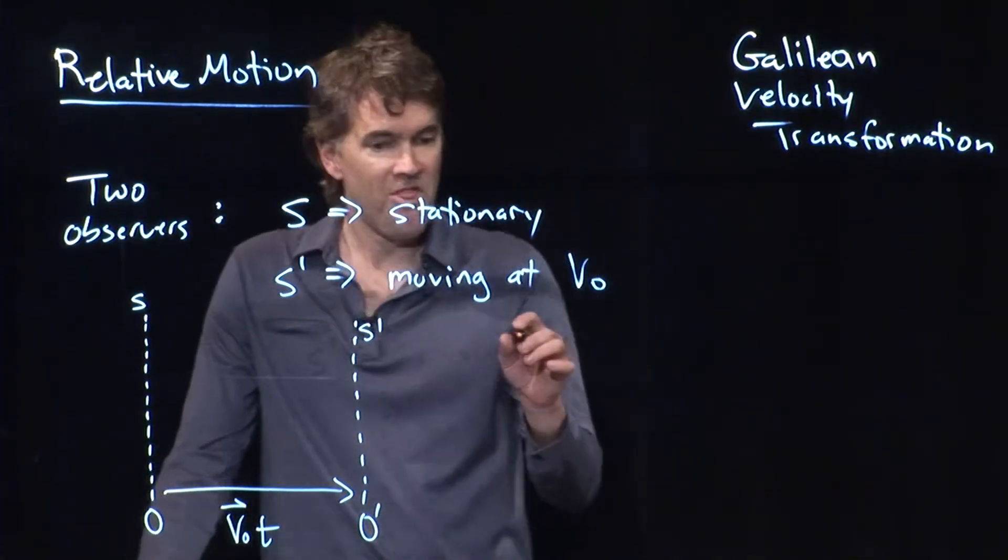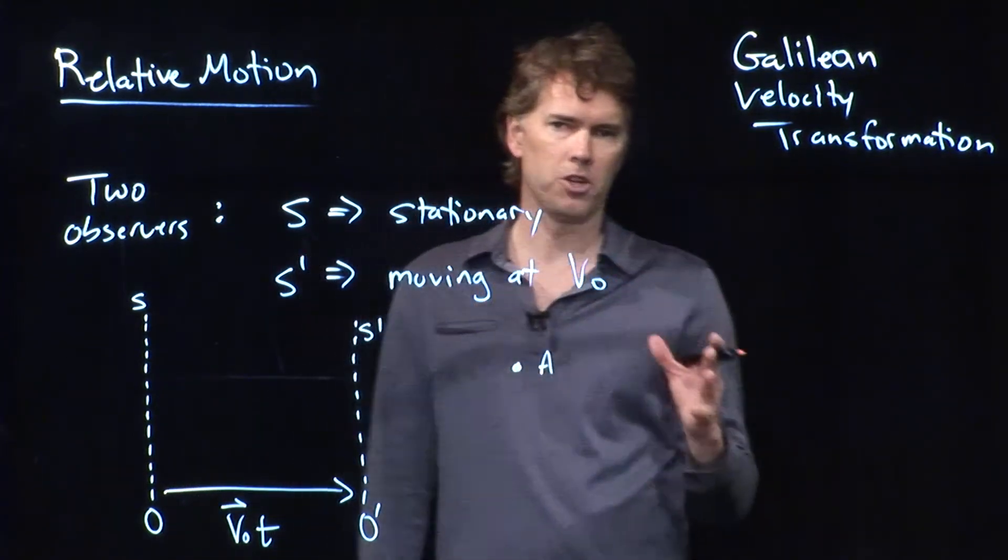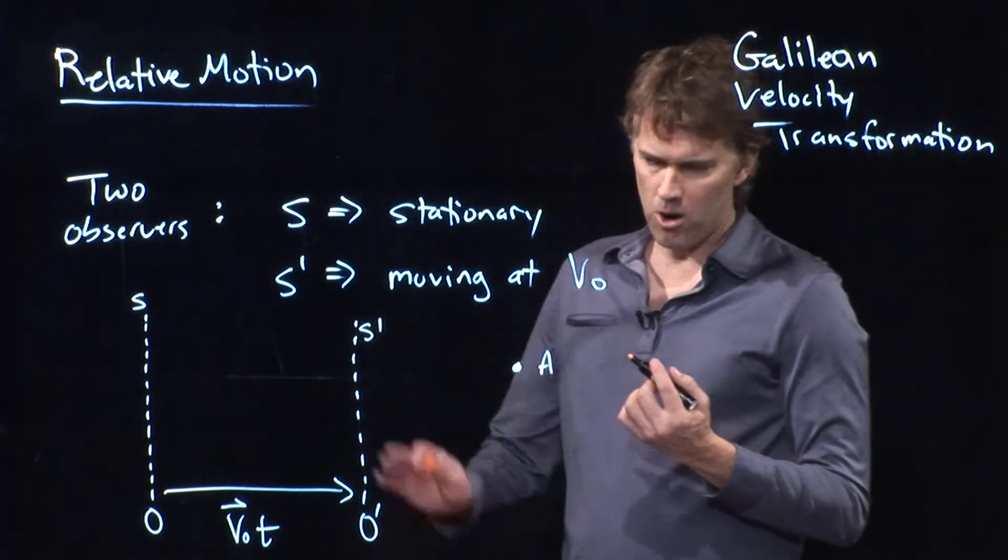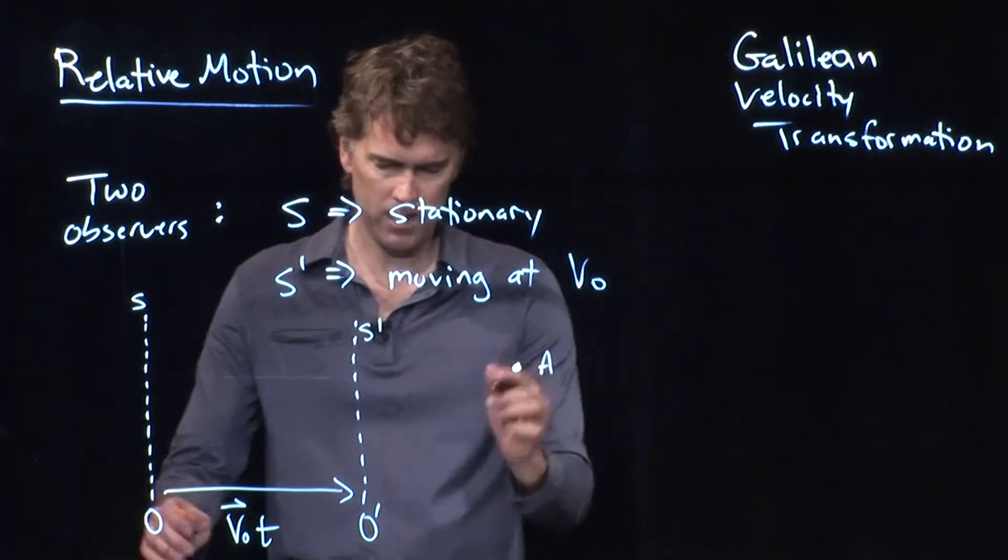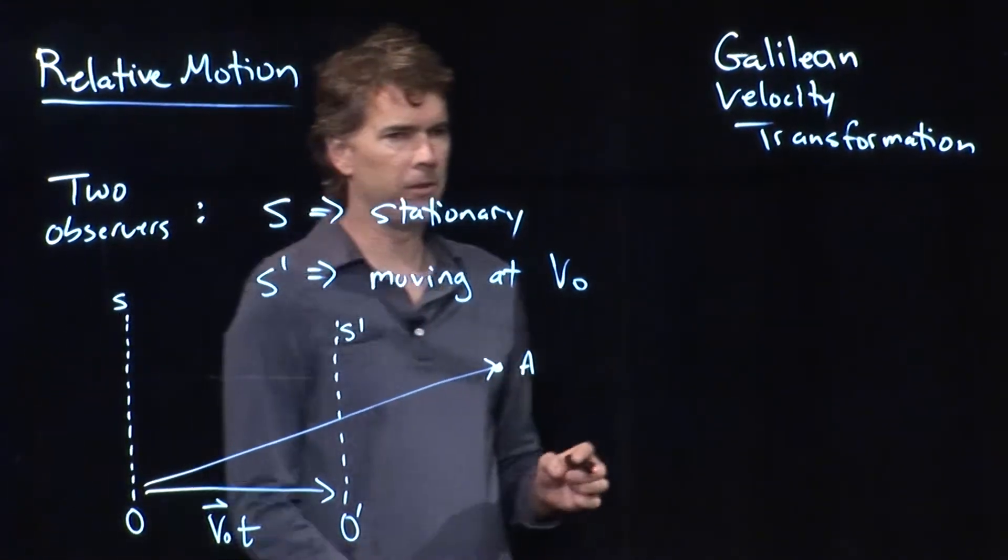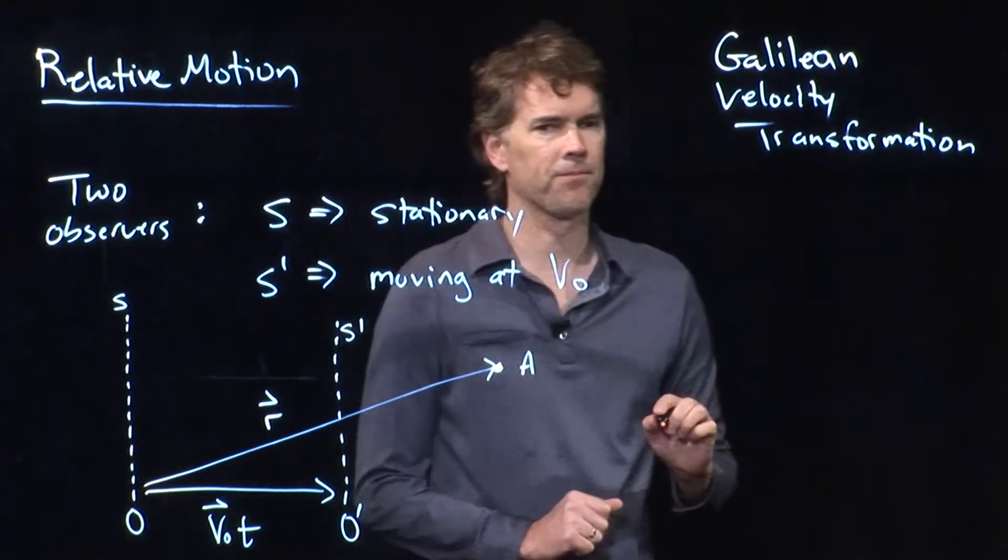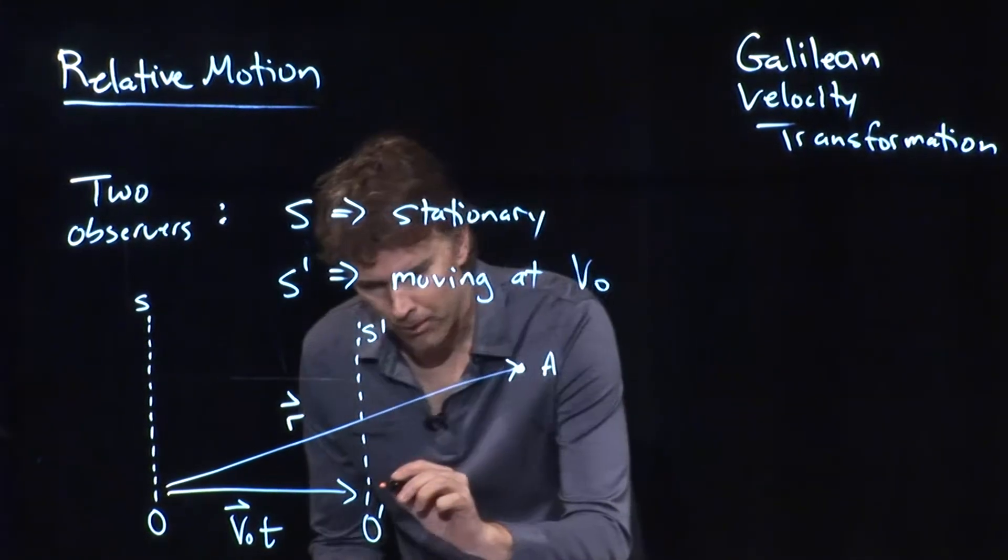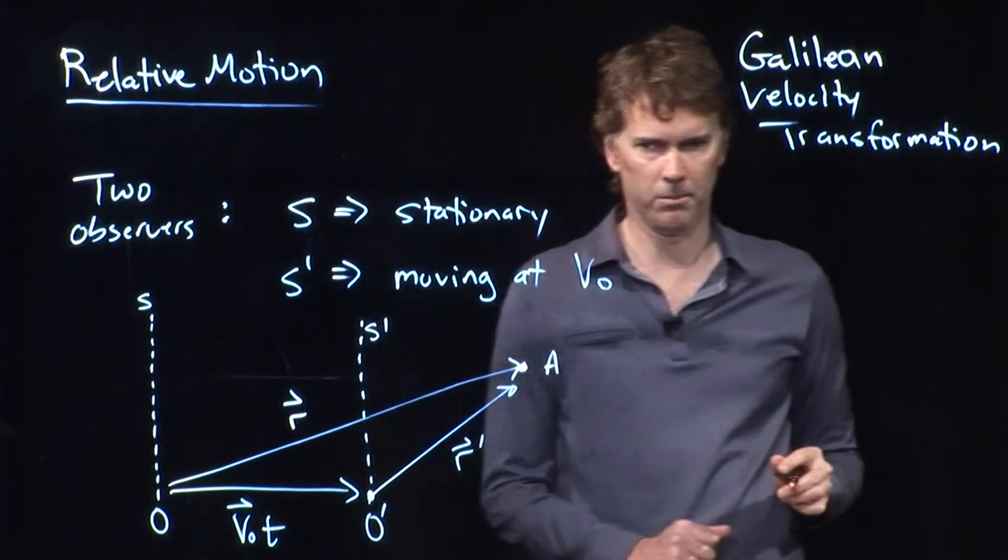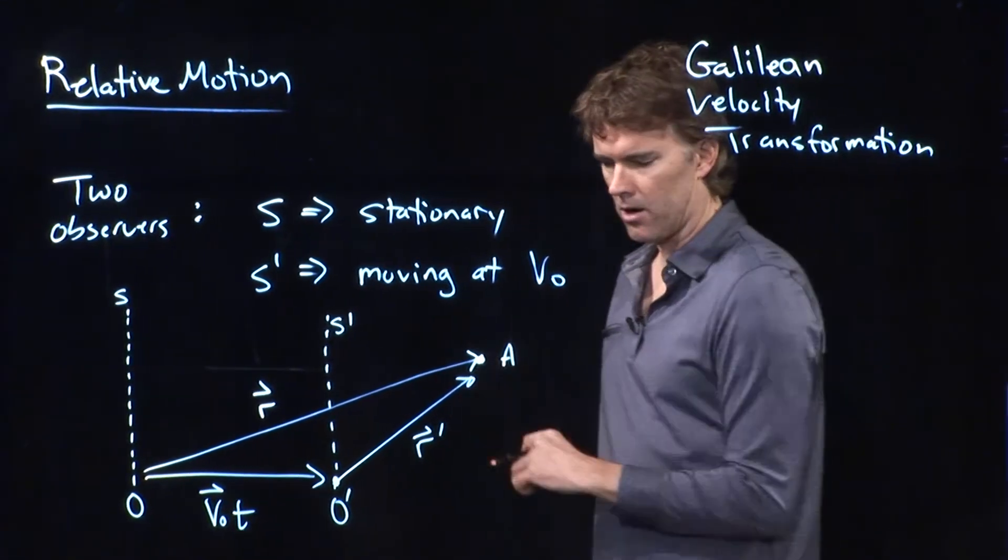Now, something that we observe is sitting up there at A. That could be the position of the pen when I tossed it. O to A is what you observe. That is the position vector that you observe. And we can call that R. But O prime to A is what the moving observer observes. And that we can call R prime.